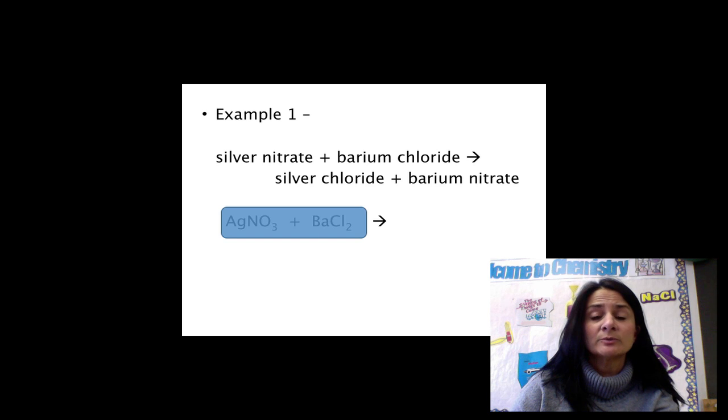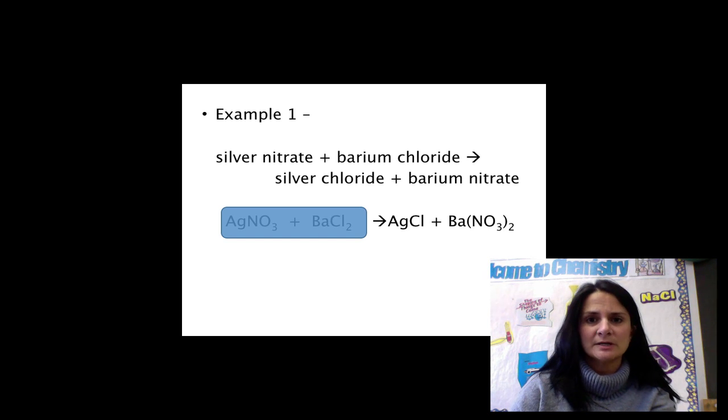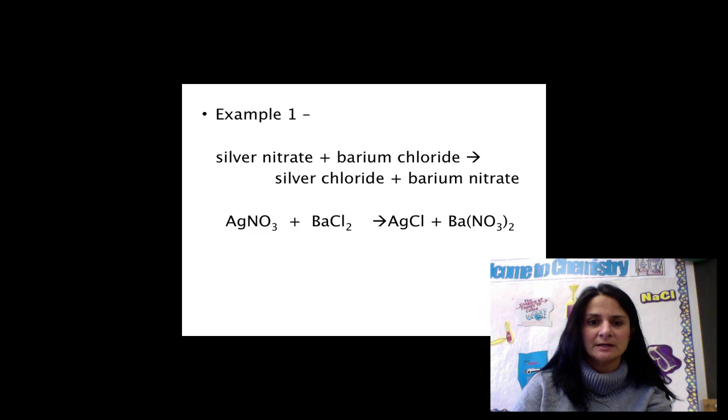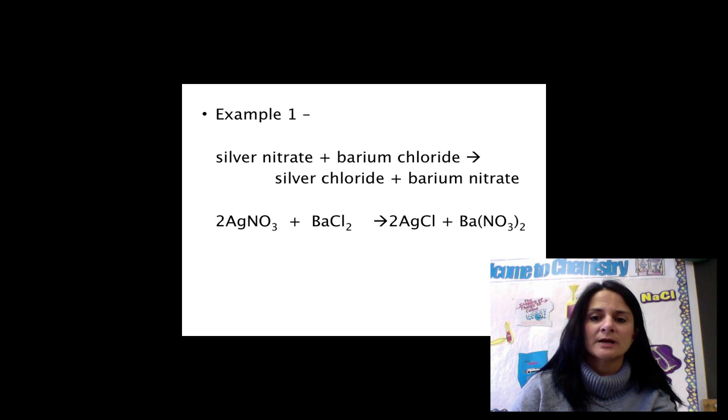On the right-hand side, we want to write the formula for silver chloride. That would be AgCl. And then for barium nitrate, it would be Ba(NO3)2. Now it's time to balance, so we will uncover the left-hand side. To balance this reaction, we need a 2 in front of the silver nitrate and a 2 in front of the silver chloride. Our reaction is now balanced.